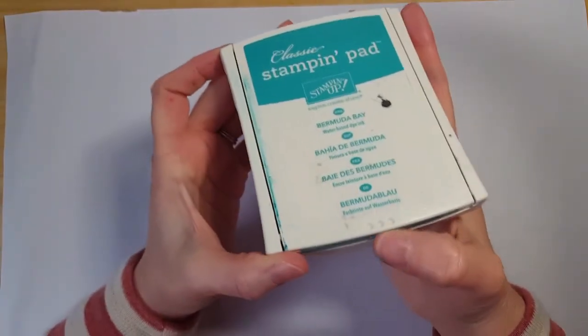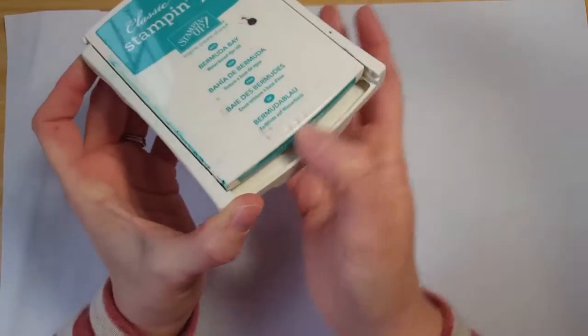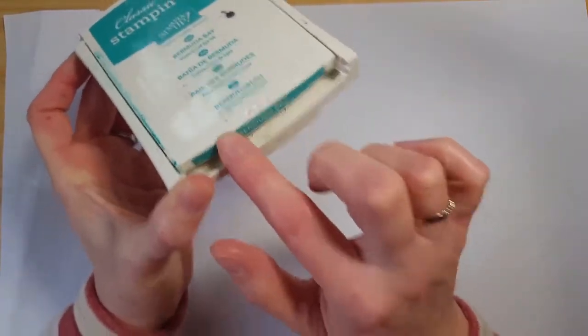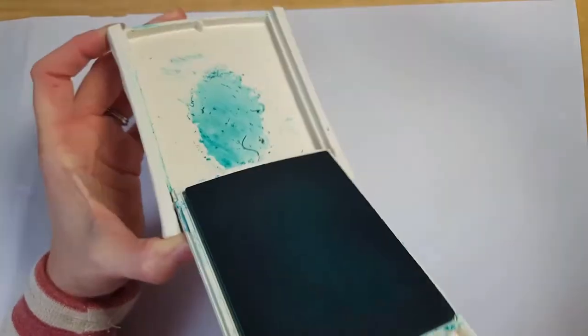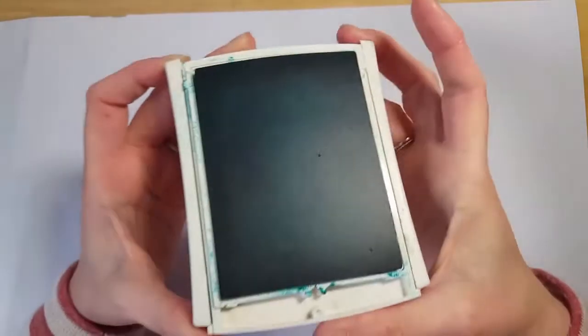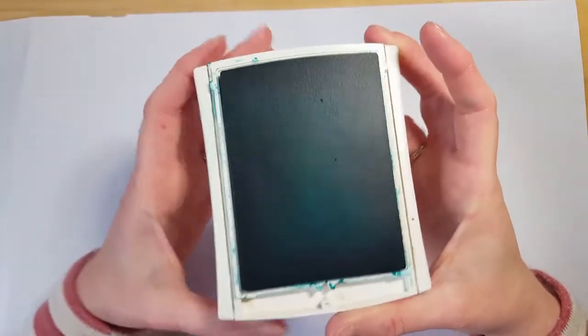So it's a little kind of funny story, but it helps you kind of remember how to put this together. So again, you're going to push right on those three little dots, push on the front of the ink pad as far as it will go, and then you're going to flip it forward and then lock it into place. And that's how you open the ink pad.